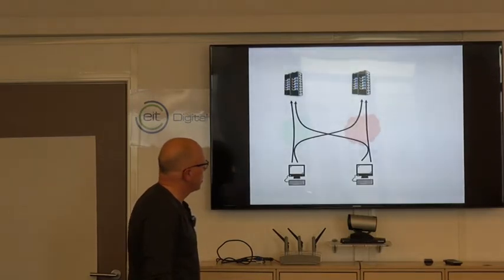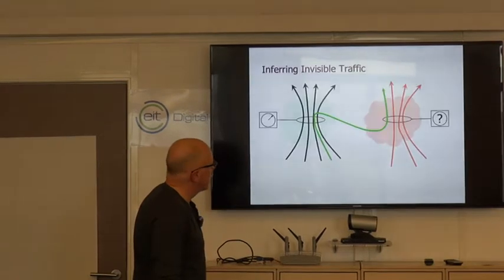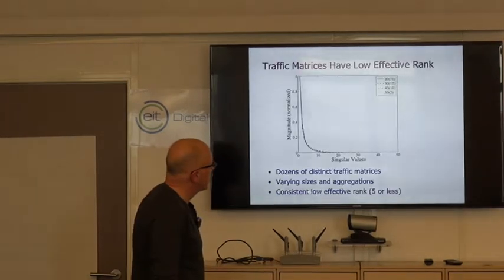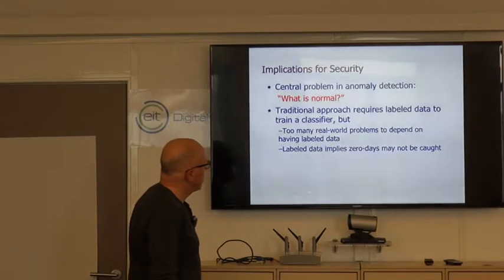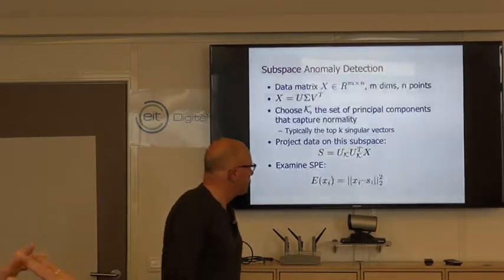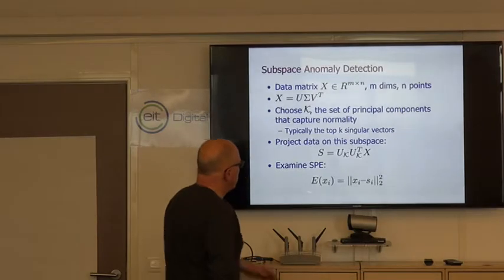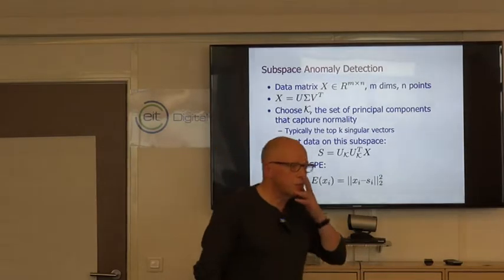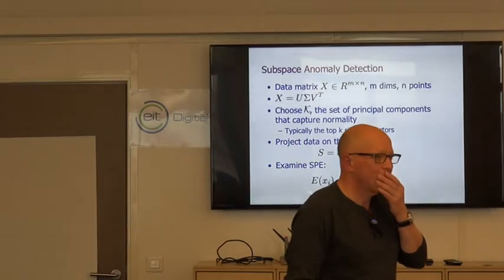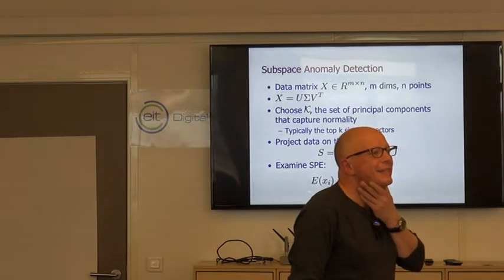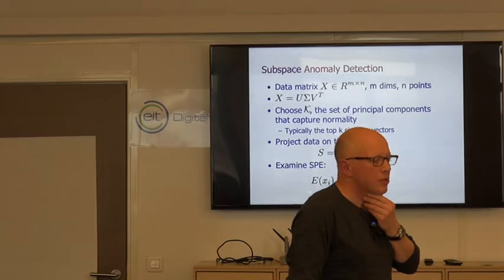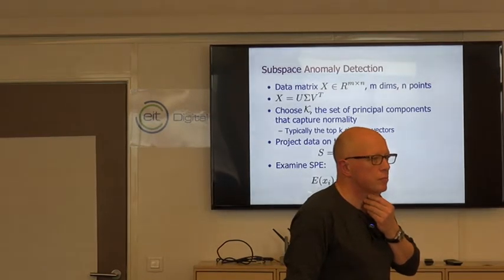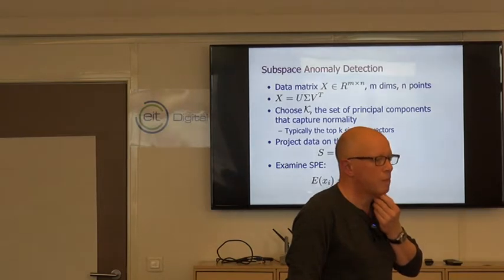And we simply project the data onto the normal subspace. Can I ask something? So for finding the normal subspace, we can still find the normal subspace in a robust way by analyzing also the other points, the anomaly points. That's right. The idea basically is that if a small fraction of the points are anomalous, then it's ignored by this singular value decomposition step.